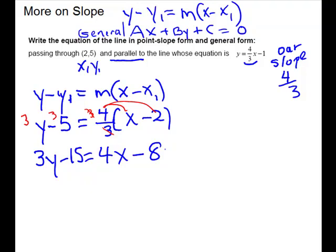Now we'll go to general form because that's what they asked for, so we need everything on one side and zero on the other. I normally write these with a positive coefficient on x. I'm going to keep 4x on the right since it's positive there, then subtract 3y to move it over, and add 15 to get zero on that side. These are different signs, so you subtract and take the sign of the larger. That is general form.